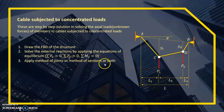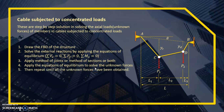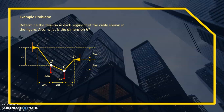With four unknowns from two pin supports, we can't use equilibrium directly. Step three: apply the method of joints or method of sections, or both. Step four: apply the equations of equilibrium to solve the unknown forces. Step five: repeat until all unknown forces have been obtained.